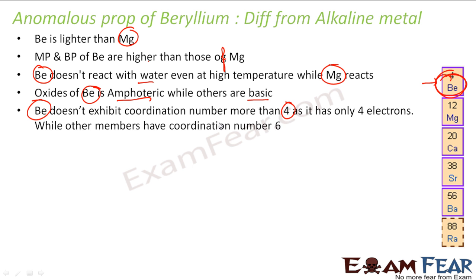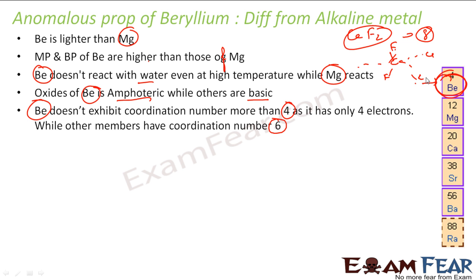Beryllium does not exhibit a coordination number more than four, but other alkaline earth metals exhibit coordination numbers of six or more. For example, in CaF2 the coordination number is eight — each calcium is bonded in a three-dimensional structure to six other atoms. So CaF2 as a molecule does not exist as such; it is a crystal form where many CaF2 units combine. The maximum number of atoms one atom is linked to is the coordination number, and for beryllium the maximum is four, while other members have more than four.